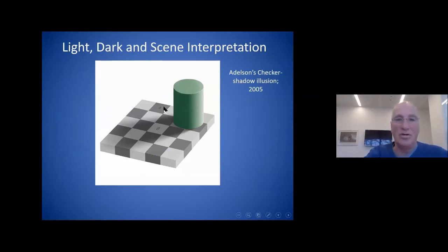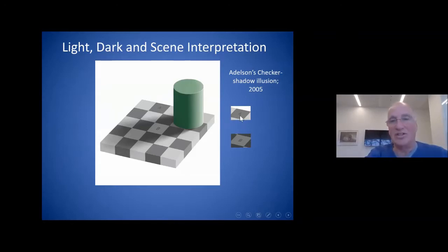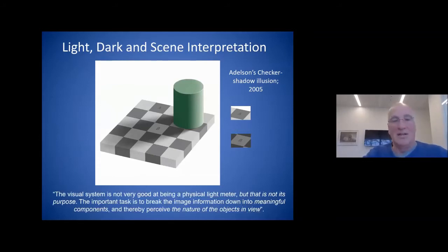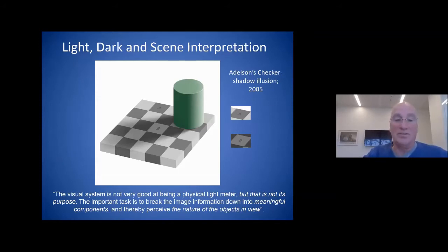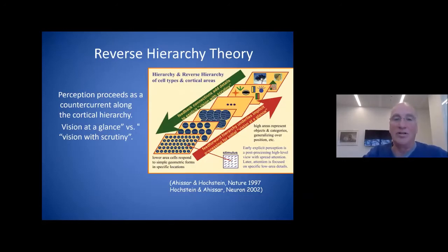One example is Adelson's checker shadow illusion. If you look at this, you would all agree that square A is darker than square B. But if you actually measure them — as I did here by isolating these elements as Adelson did — they are of the same luminance. As Adelson and others have said, the visual system is not very good at being a physical light meter, but that is not its purpose. The important task is to break the image information down into meaningful components and thereby perceive the nature of the objects in view.